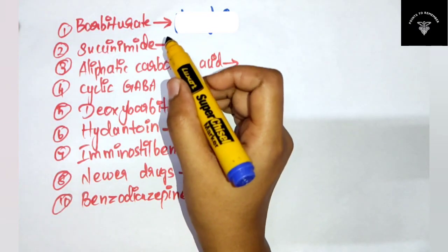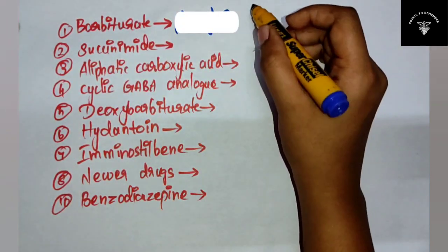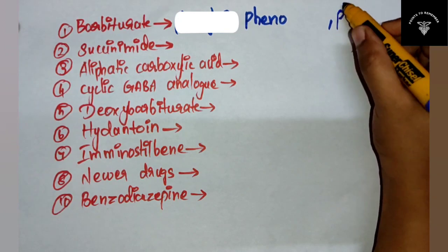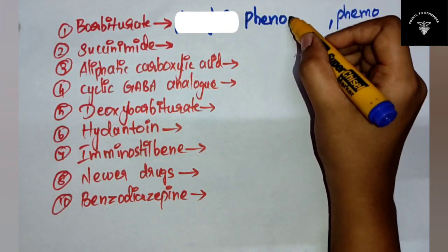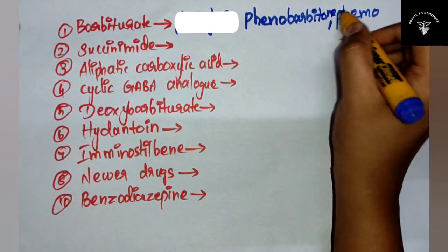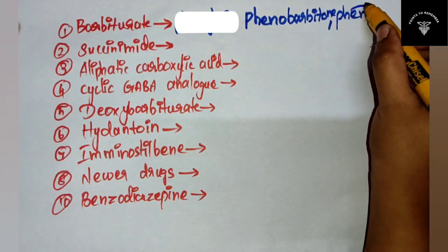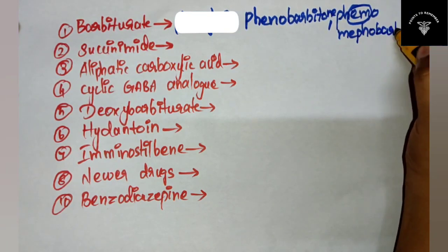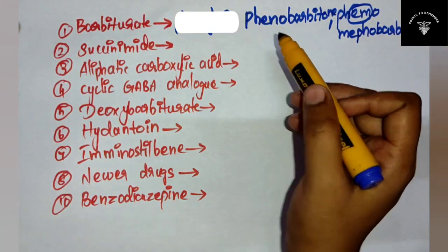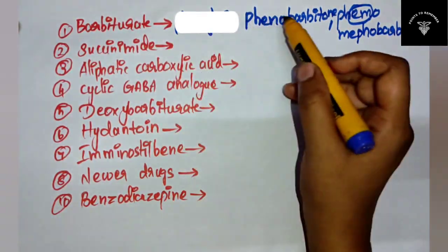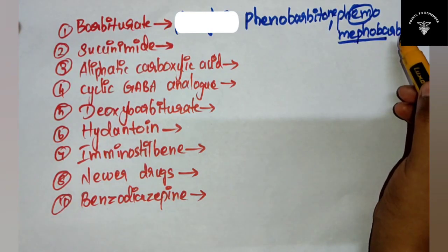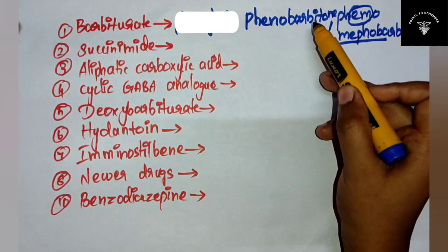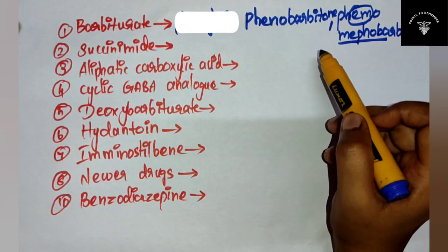Now let's see what drugs come under barbiturate. You can remember as 'Fino and Fimo' - that is phenobarbitone and mephobarbitone. You just put the middle letters in front: Fino = phenobarbitone, and Fimo = mephobarbitone.